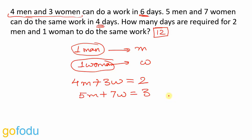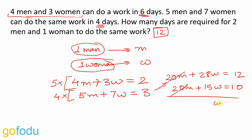So we have two equations and two variables, solve them. I'll multiply this equation throughout by 5 and this one throughout by 4. This gives me 20M plus 28W is equal to 12 and 20M plus 15W is equal to 10. Subtract both the equations and we will get 13W is equal to 2 or W is equal to 2 upon 13.